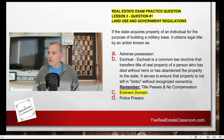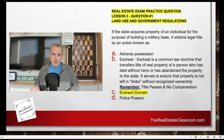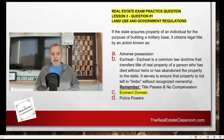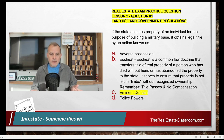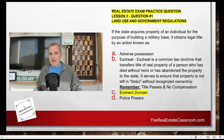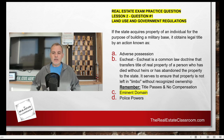Escheat — I always tell my students that escheat's root word is 'cheat,' because the government is essentially cheating someone out of their property. Escheat is an old common law doctrine that many states have codified within their statutes. It allows a government agency to wrap up one's estate and someone's affairs if they've died intestate — meaning they died without a will and there are no heirs to be found. There has to be a legal mechanism to wrap up this person's affairs, so the government will take title to the property, sell it, and what happens to the proceeds is determined by state statute.